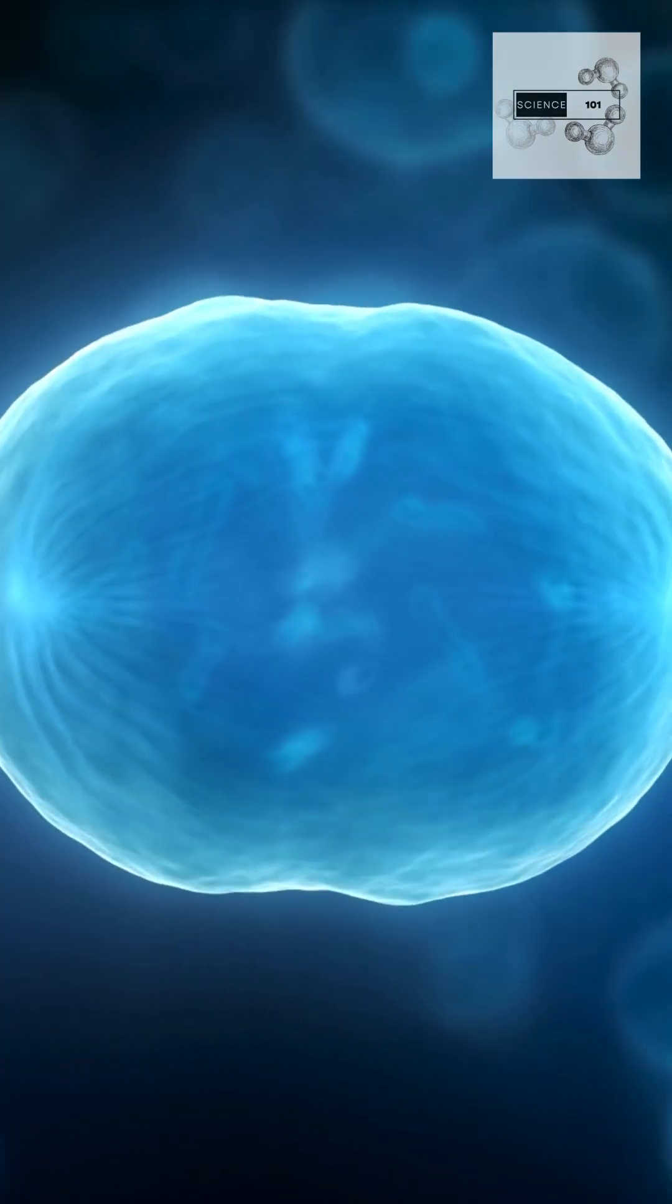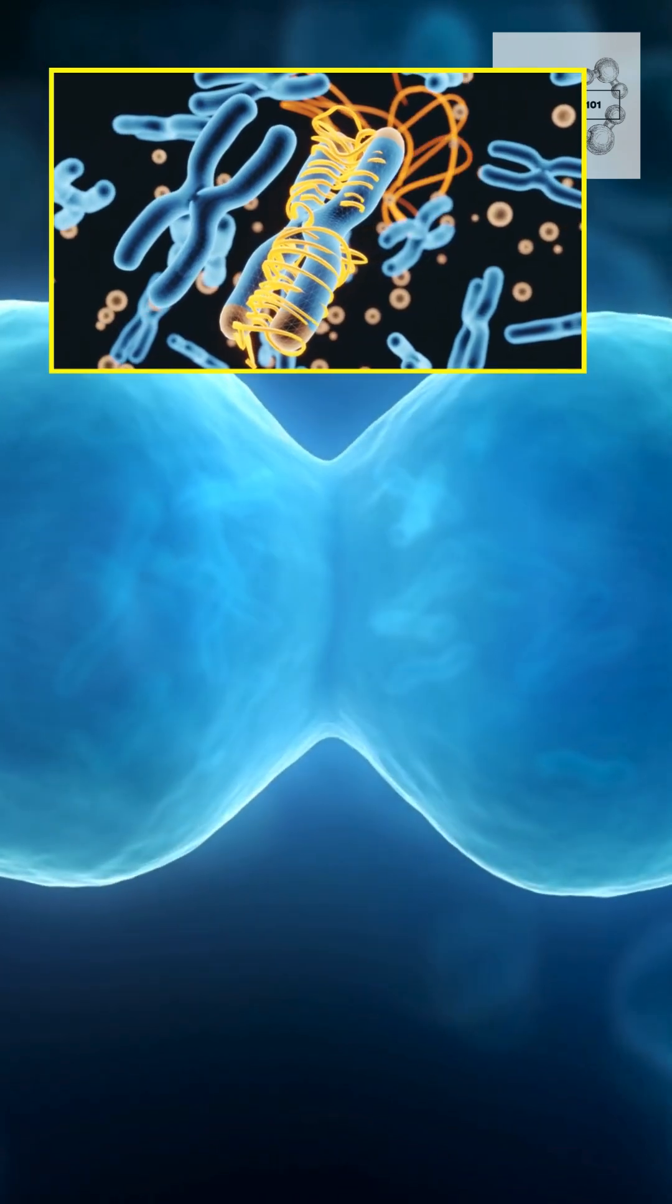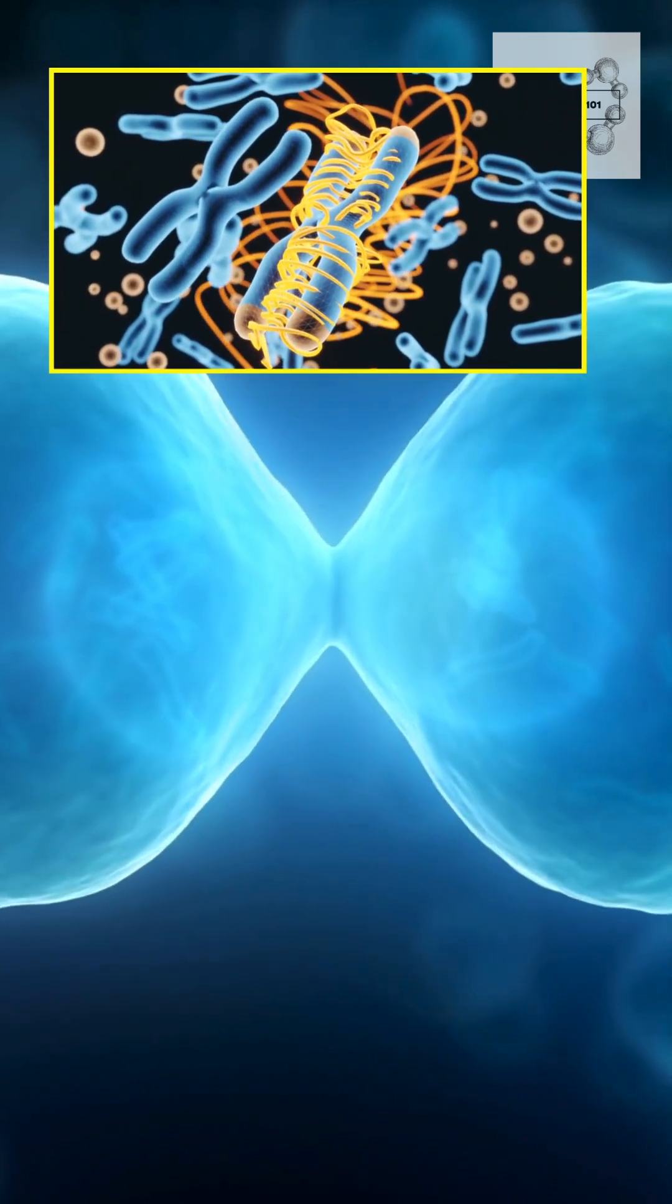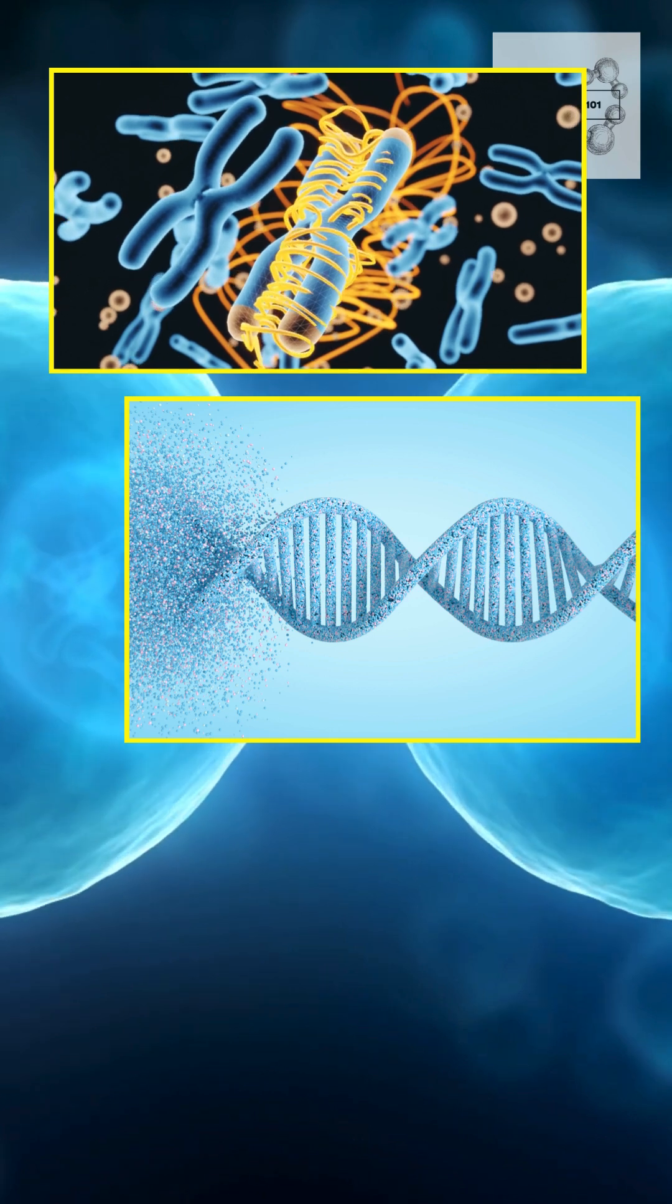Every time your cells divide, the ends of your DNA, called telomeres, get shorter. If they shrink too much, the cell stops working or dies.